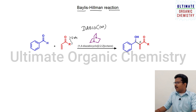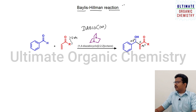This leads to the formation of a product where you will find a carbon-carbon single bond formation between the alpha position of the alkene part and the carbonyl carbon. If you check the hybridization of these two carbon atoms, here you have SP2 and here you have SP3. So during the course of the Baylis-Hillman reaction, there is a formation of an SP3–SP2 C–C single bond.